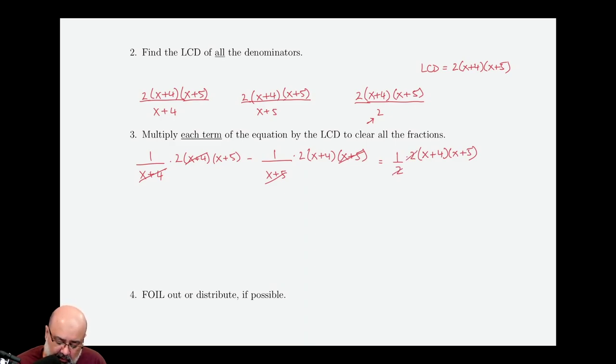The x plus 5 goes away and the 2's go away. So what we have left over is 1 times 2, which is 2 times x plus 5, minus 1 times 2 again, which is 2 times x plus 4, equals x plus 4 times x plus 5.